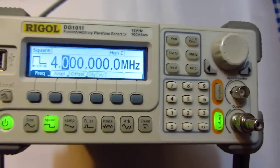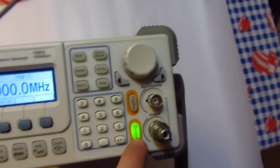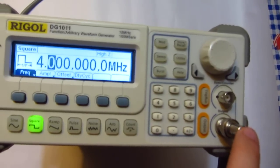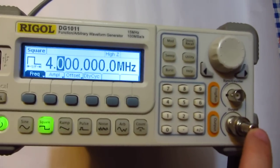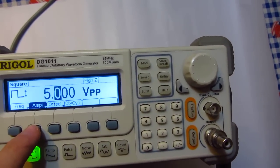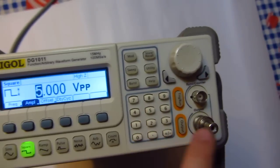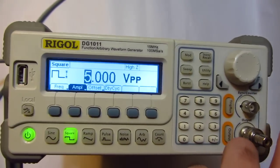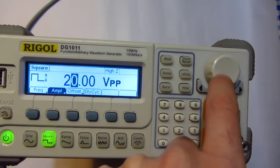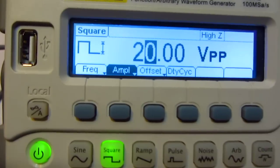If I disconnect the output like this, then no current will exit on this plug. Amplitude - let's go here. This is the output voltage which comes out here. It's set to 5 volts. Let's increase it - it goes up to 20 volts, 20 volts peak-to-peak.